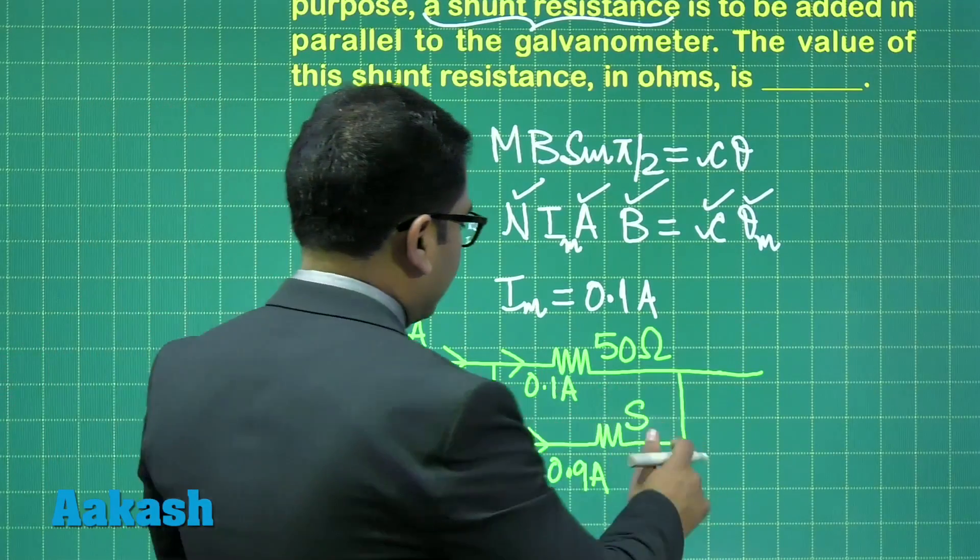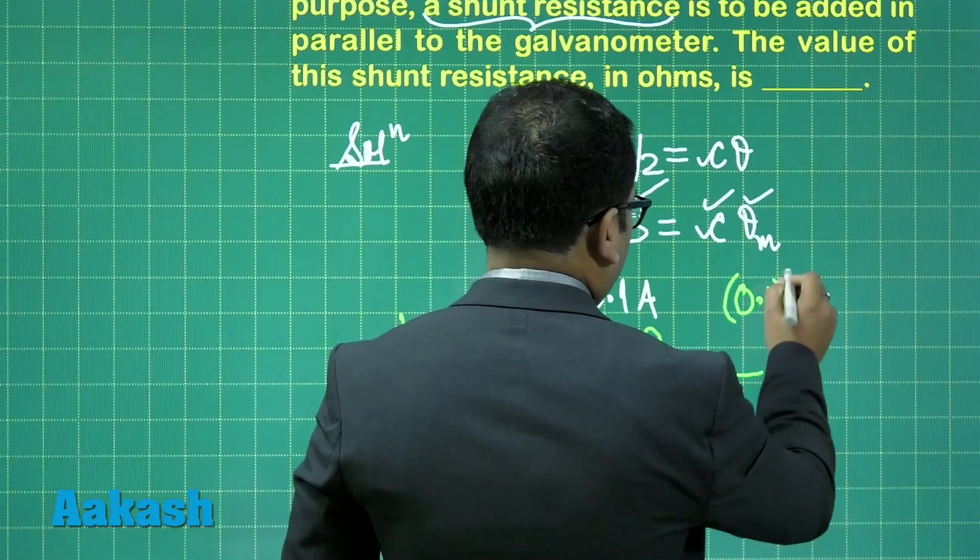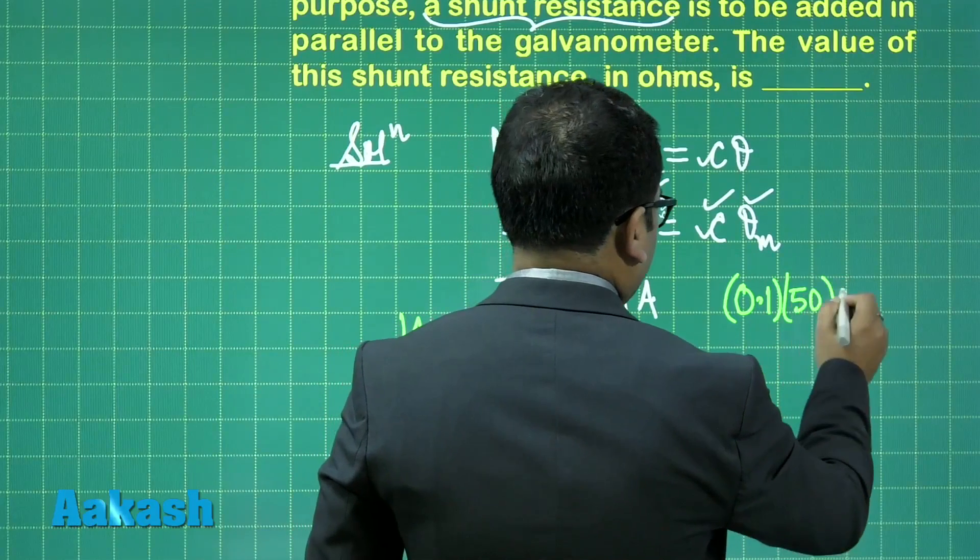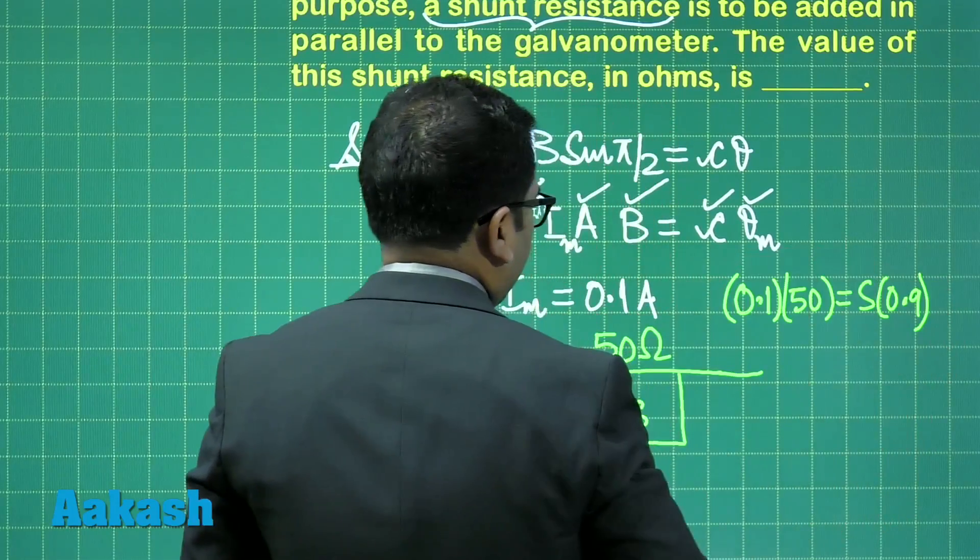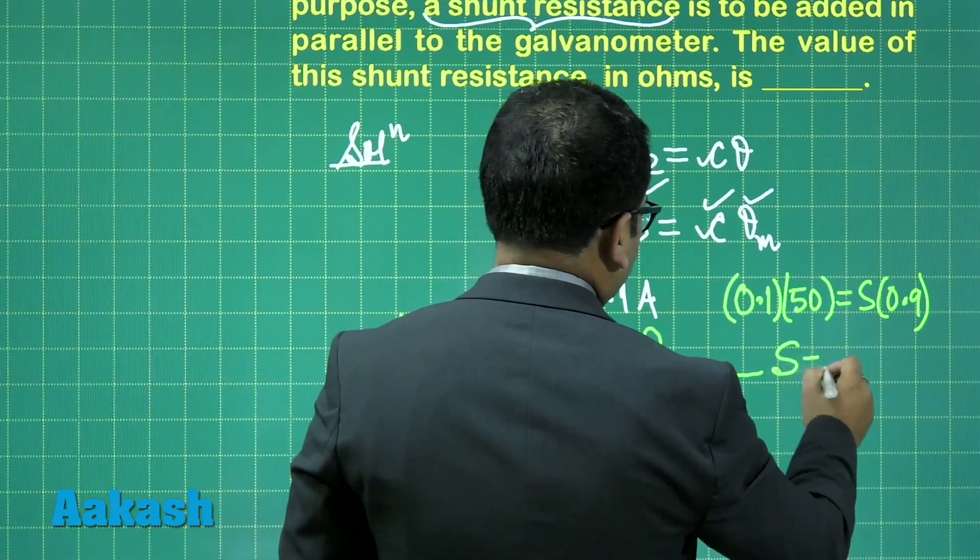So they are in parallel, which is straightforward: 0.1 into 50 is equal to shunt multiplied by 0.9. And when you calculate this and round off, this is quite a simple one.